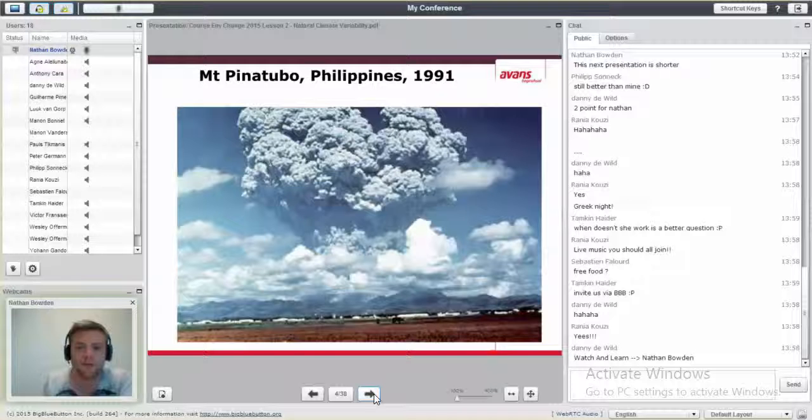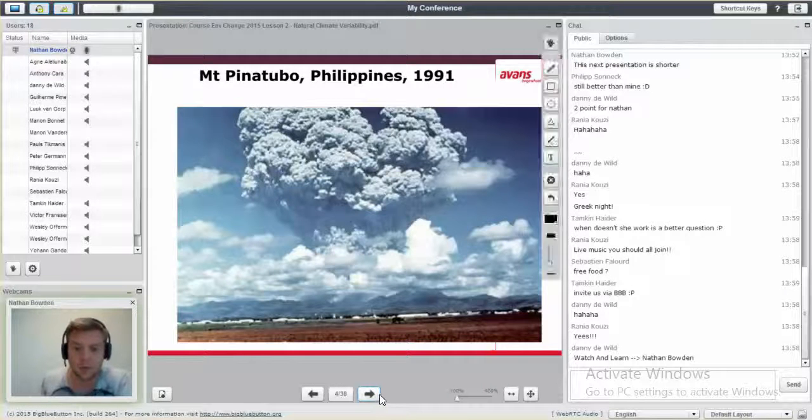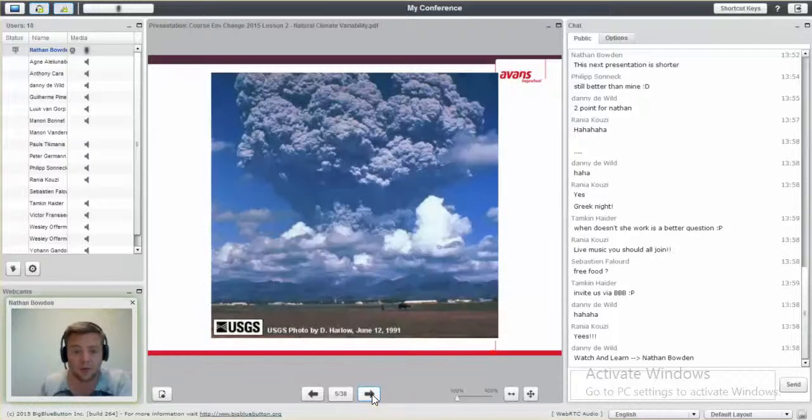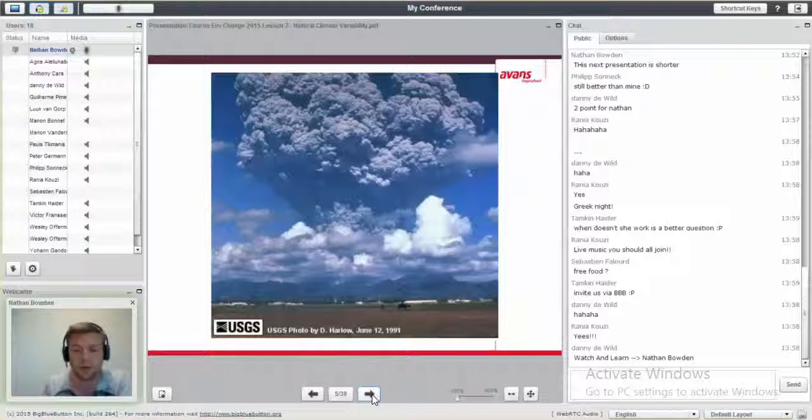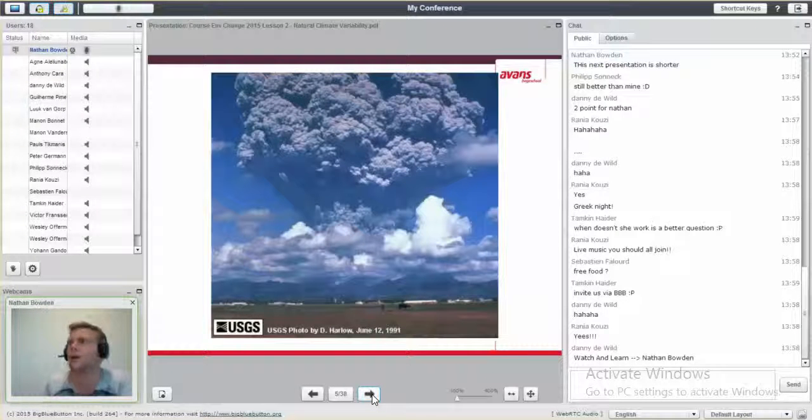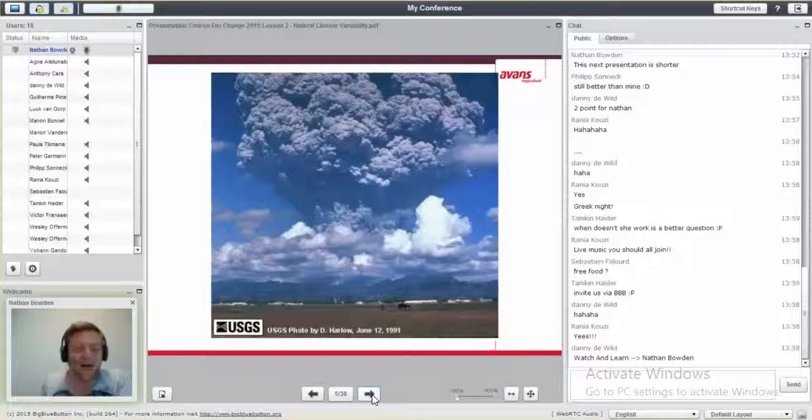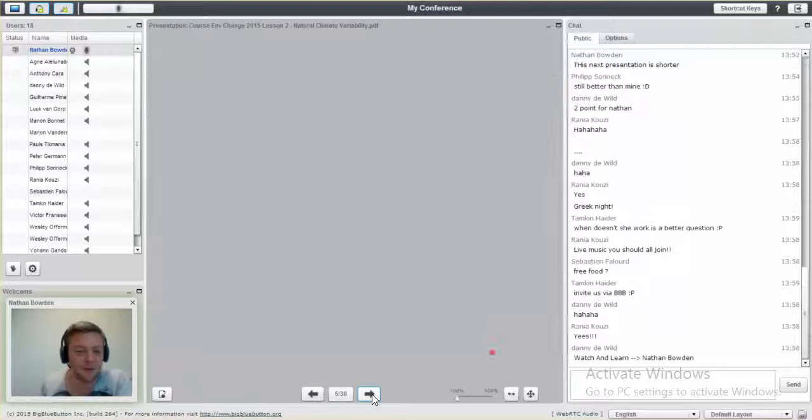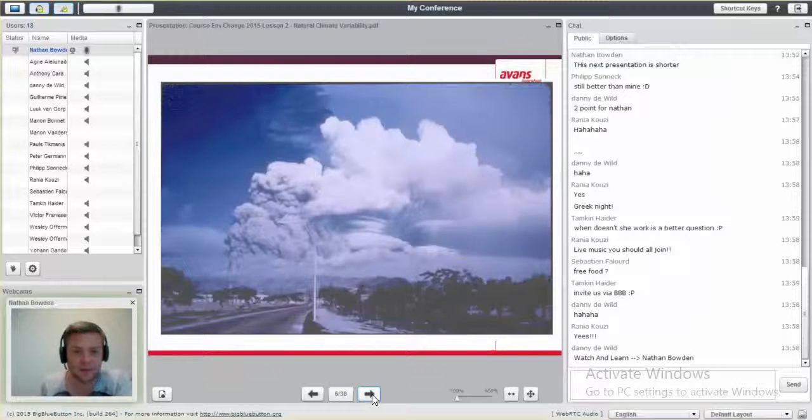Mount Pinatubo in the Philippines in 1991. Mount Pinatubo is a volcano. It's quite an active volcano. Since 1991, it has had small eruptions, but not as big as the one in 1991. The eruption was captured on pictures. A lot of you probably weren't even born then. But I was. I remember it. It was big in the news.